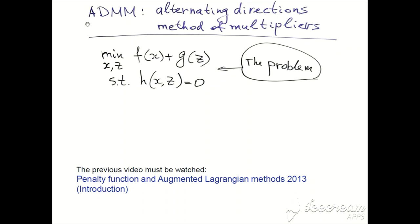Hello, today we will talk about ADMM, the Alternating Directions Method of Multipliers. The method is dedicated to solution of constrained optimization problems when the objective function is separable, so our variables constitute two sets X and Z. The objective is a sum of two convex functions, and the vector constraints, equality constraints, is a linear function of those two variables.